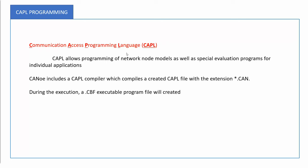We can use CAPL programming for the network node to act as a network node itself, and also use the same CAPL programming to evaluate some functions using test modules. CANoe includes a CAPL browser and CAPL compiler, which compiles a created CAPL file with the extension .can. When you compile it, you get a .cbf file, which is an executable programming file.